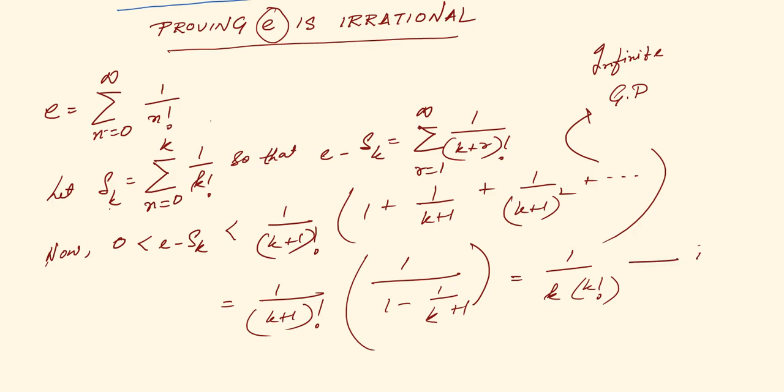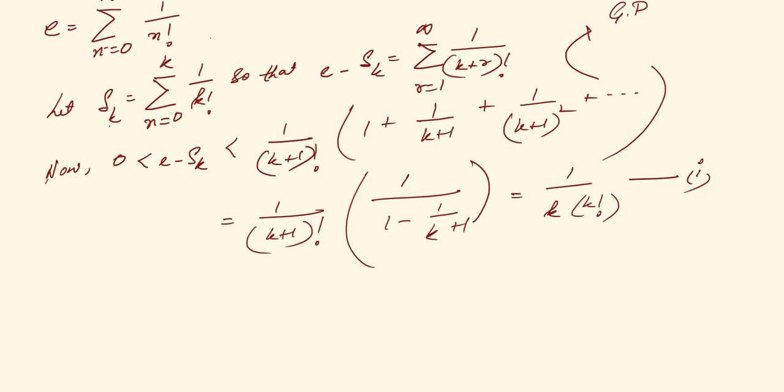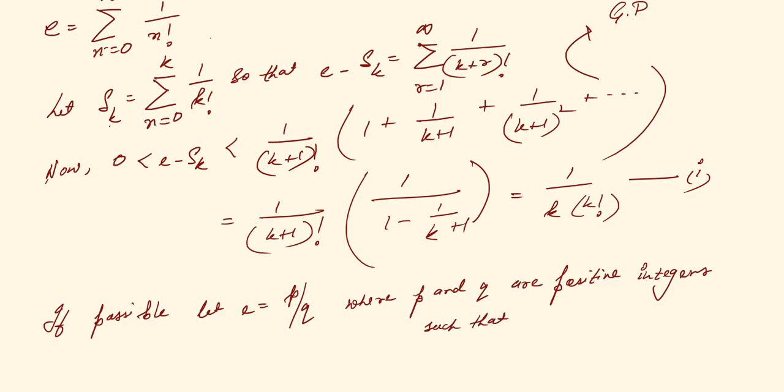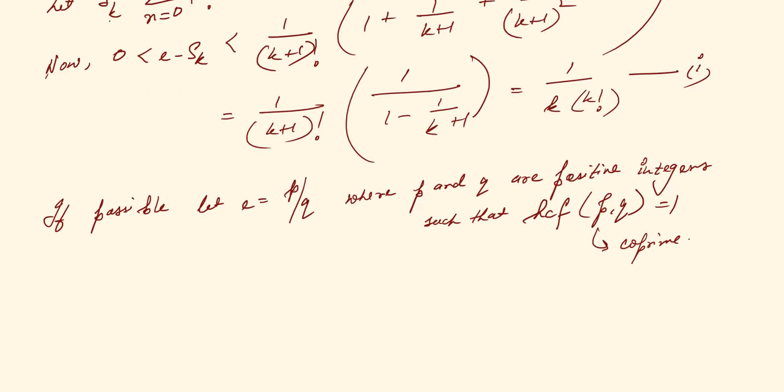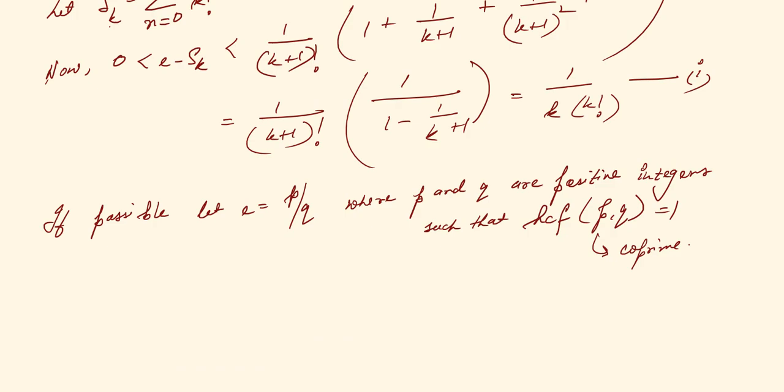Now we will solve. If possible, let e equals p by q, where p and q are positive integers such that HCF of p and q is equal to 1. In other words, p and q are co-prime to each other. So basically we have assumed that e is rational, let e be a rational term.